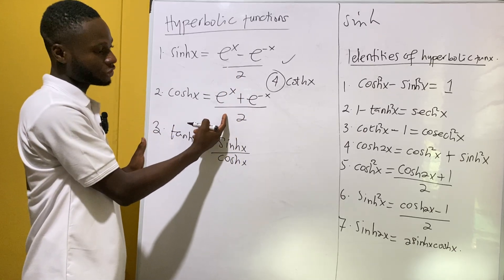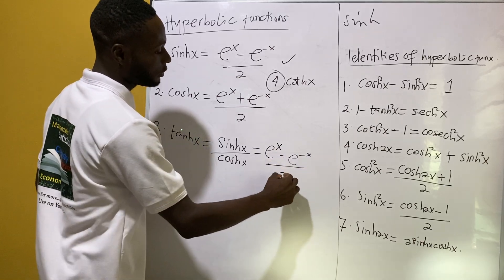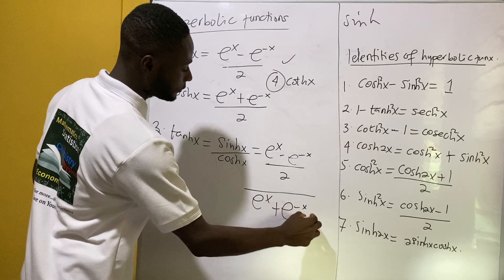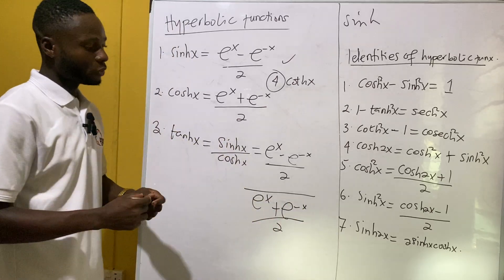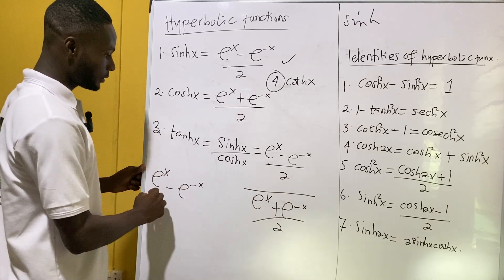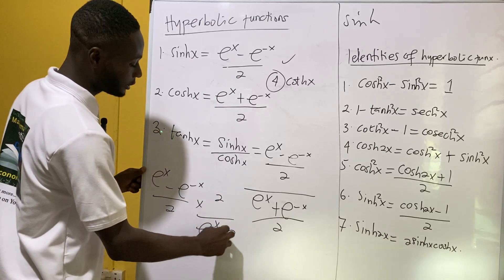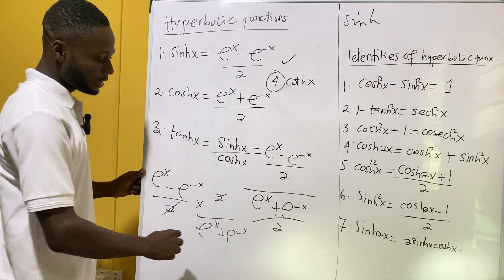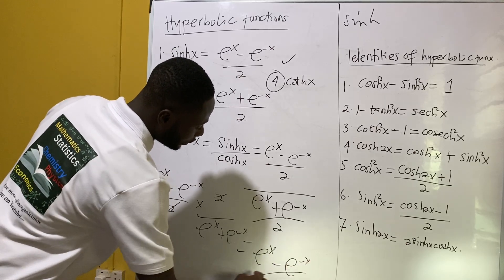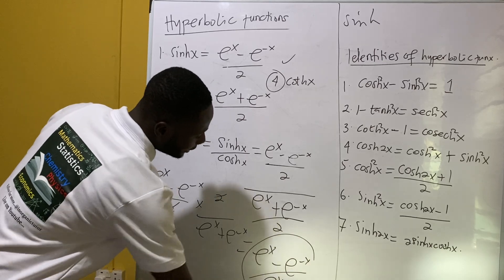We have sinh here and cosh here, so what we do is take e^x minus e^(-x) all over two, divided by e^x plus e^(-x) all over two. When you do proper simplification, the two's cancel out and we get e^x minus e^(-x) all over e^x plus e^(-x), and this is the hyperbolic function for tanh.